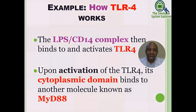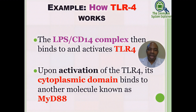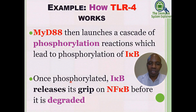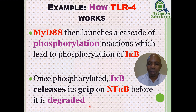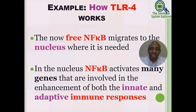The LPS-CD14 complex then binds to and activates TLR4. Upon activation of TLR4, its cytoplasmic domain binds to a molecule known as MyD88. MyD88 then launches a cascade of phosphorylation reactions leading to phosphorylation of IκB. Once phosphorylated, IκB releases its grip on NF-κB and is degraded. The now free NF-κB migrates to the nucleus, where it activates many genes involved in enhancement of both innate and adaptive immune responses.